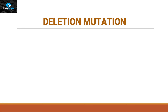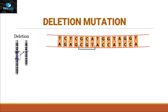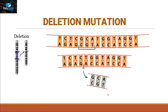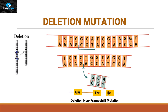Let's discuss micro-deletions in detail. With this DNA double strand, if the GCA portion gets deleted, we lose one amino acid because three nucleotides code for one amino acid. The protein generated by this DNA will have glutamine, arginine, threonine, and isoleucine — but this arginine is not present because the nucleotide coding for it is lost in this deletion mutation. This type of deletion mutation is called a deletion non-frameshift mutation.